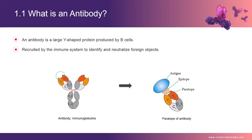An epitope refers to the specific target against which an individual antibody binds. When an antibody binds to a protein, it isn't binding to the entire full-length protein. Instead, it is binding to a segment of that protein known as an epitope.